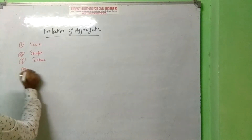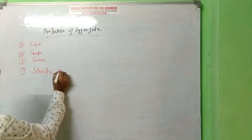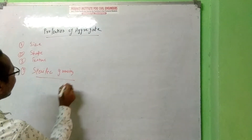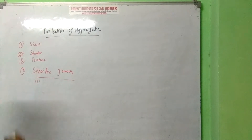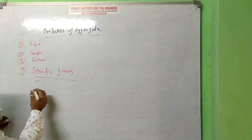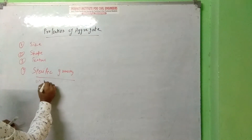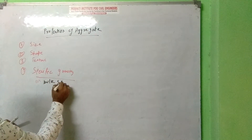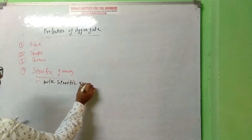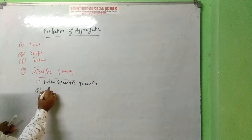The fourth property is specific gravity. Specific gravity is divided into two parts: the first is bulk specific gravity, and the second is apparent specific gravity.